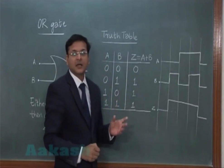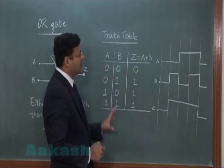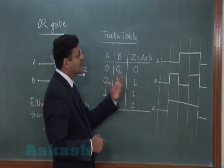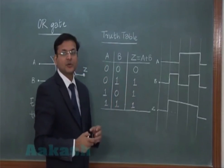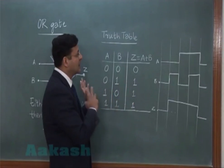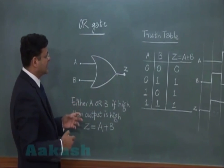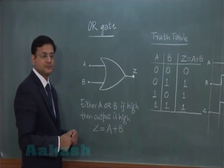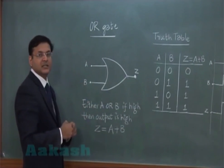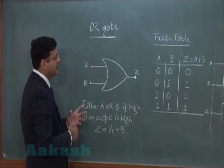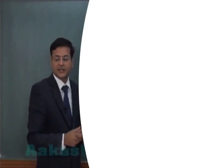You see, so truth table can either be represented in terms of table like this, or it can be represented in the pulse form, the way it has been shown there. Now, how do you happen to carry out this kind of operation? If you talk about the internal structure of the OR gate, then try to understand that.